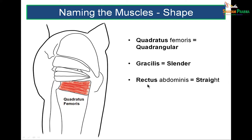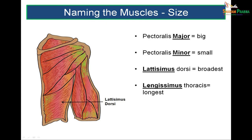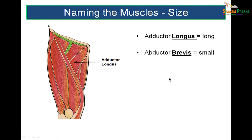Naming muscles based on size: pectoralis major and minor refers to large or small. Latissimus dorsi is the broadest muscle seen in the back, hence called latissimus. Longissimus thoracis — longissimus means longest. Adductor longus means long, and adductor brevis is much shorter.